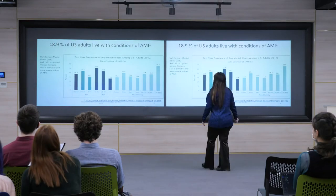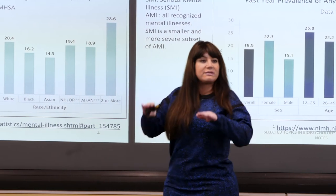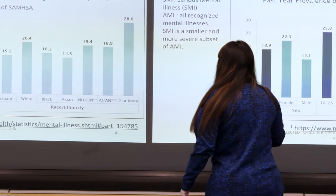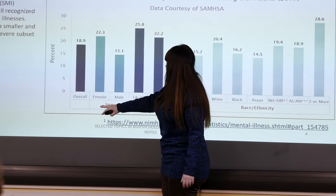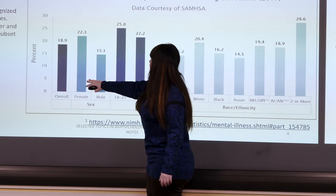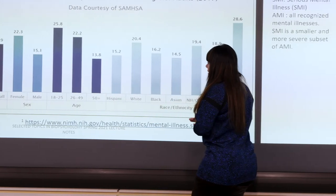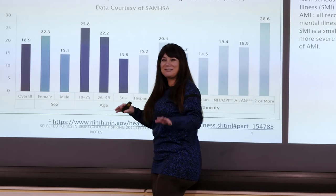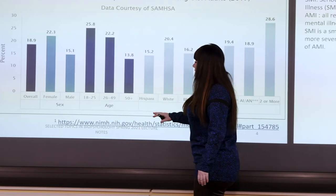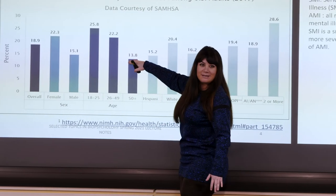Here is data from the United States showing that about 20% of US adults live with conditions related to mental disorders. AMI is a general category describing any mental disorder. For comparison, females are about 22% and males about 15%. Looking at age-related distribution, the highest prevalence is in the 18–25 age group — which is likely your age range — and it drops after that.